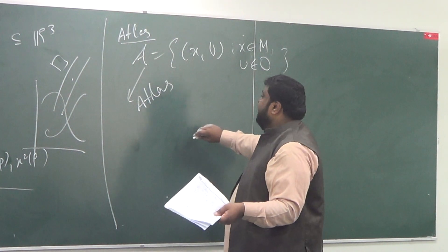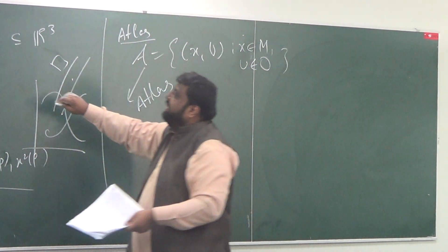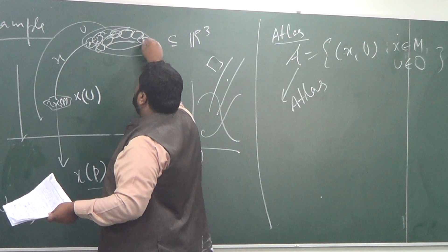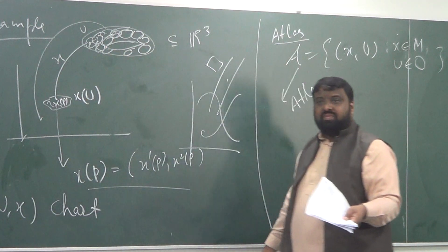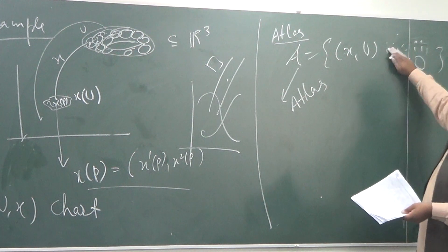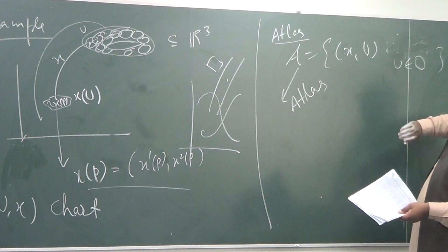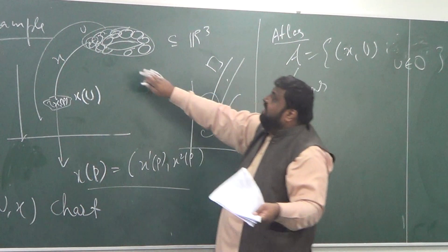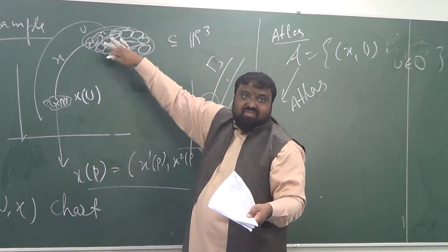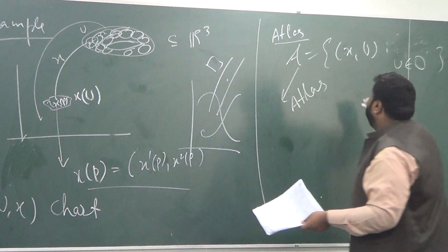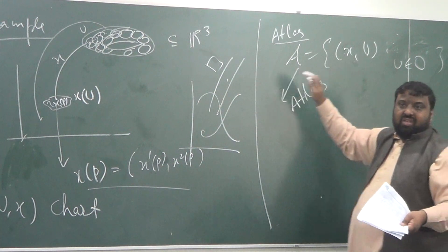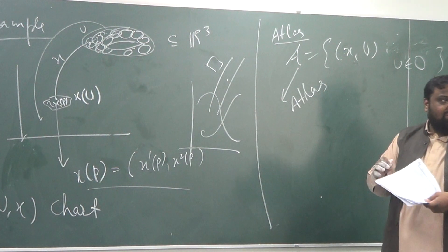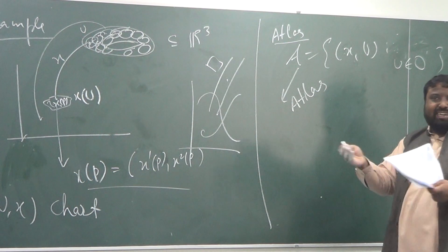So this would be a good atlas. What you can expect from an atlas: you see you have different points and you have different patches. We are saying X belongs to M — X is a map. So I have lots and lots of patches. So this would be a complete description of this whole manifold. Therefore I am calling it an atlas. You can also treat that as a real-world atlas.